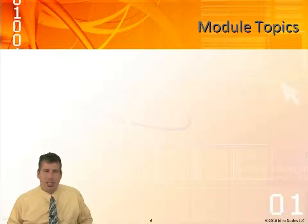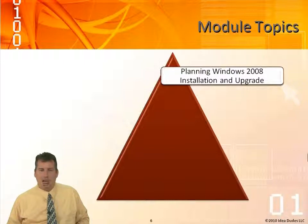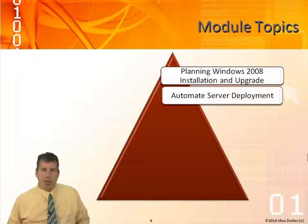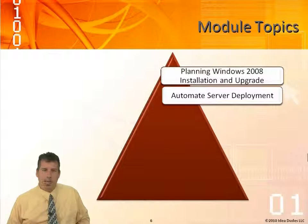Let's take a look at each of the different modules we're going to be going over. The first module looks at planning Windows Server 2008 installation and upgrade — dealing with Windows Deployment Services, Windows Automation and Installation Kit, the unattend XML file, the PXE environment, and Windows PE. We also have automating the server deployment, bringing together Windows Deployment Services in conjunction with SCCM 2007 to achieve a zero-touch environment, where SCCM 2007 provides the infrastructure to automate the whole installation through WDS.